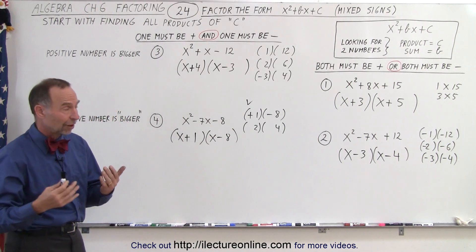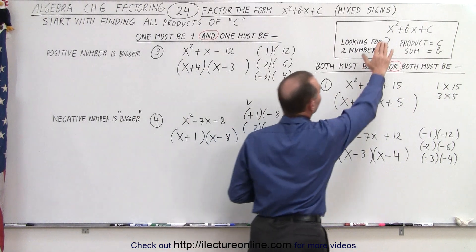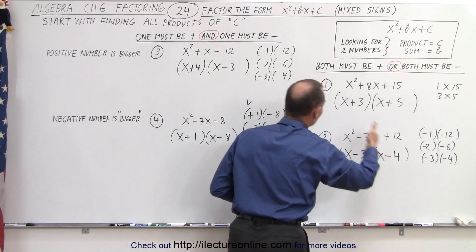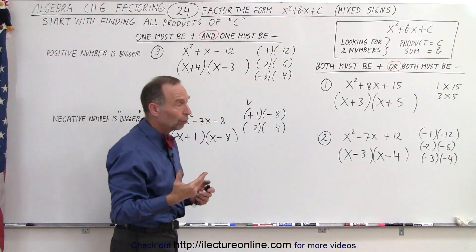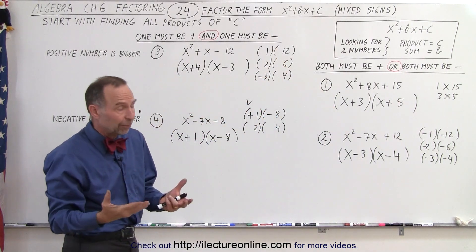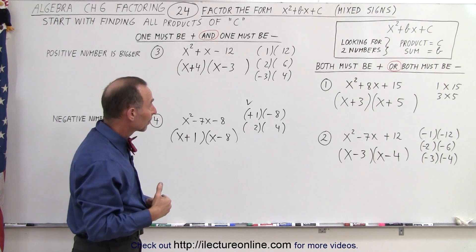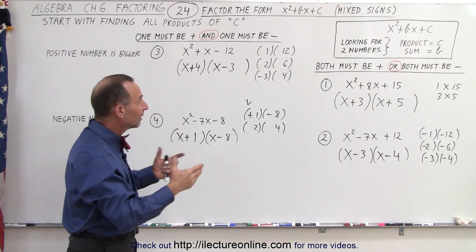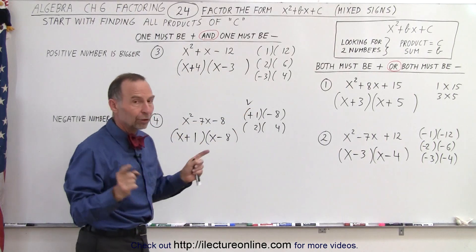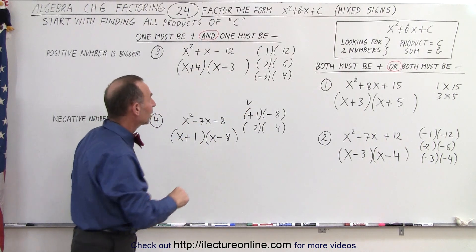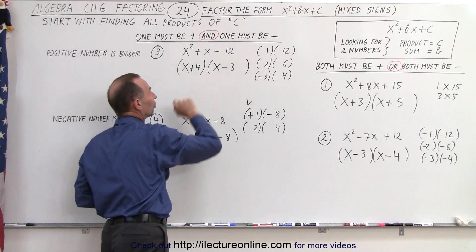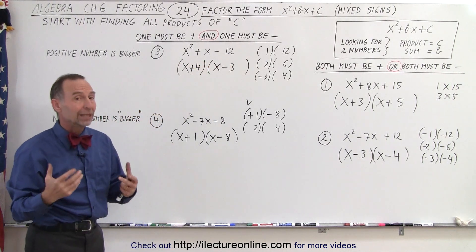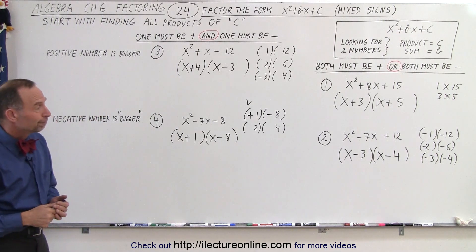So you can see that when you have a trinomial of the form x squared plus bx plus c, we have to recognize by looking at the third term whether all the signs are positive, all the signs are negative, or one is positive and one is negative. Once you determine that, you go to the same procedure: you're looking for two numbers — when you multiply them together you get the third term, and when you add them together you get the second term. And that's really the way to go about it.